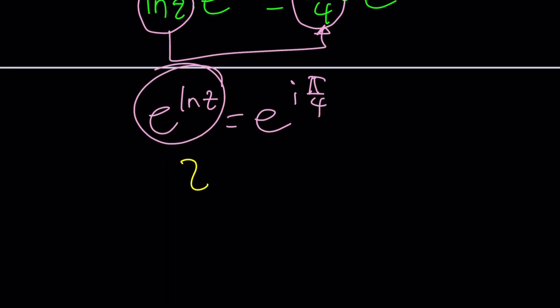But what is e to the power i π/4? You can leave it like this or write it as cosine π/4 again plus i times sine π/4 using the conversion. Thanks to Euler. And that can be written as root 2 over 2 plus i times root 2 over 2. Are there any other solutions?